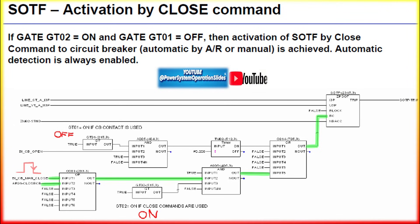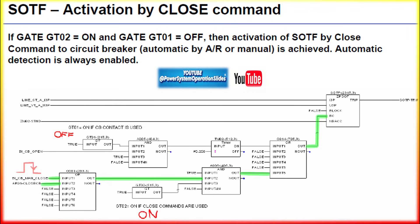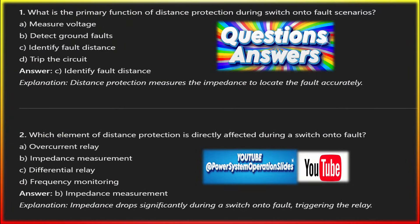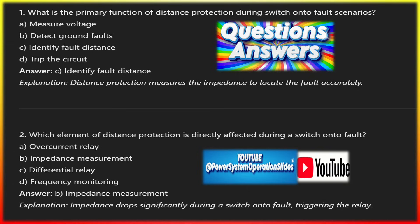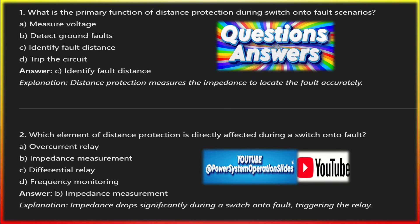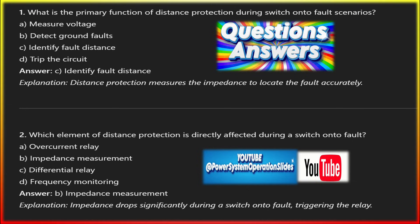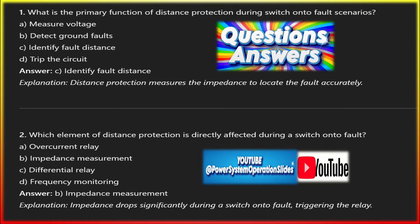Several challenges affect the proper functioning of SOTF. For setting coordination: misconfiguration between SOTF and regular distance protection zones can cause undesired tripping or delayed fault clearing. If the overcurrent threshold is set too high, the relay might fail to detect lower magnitude faults such as high-resistance faults. On the other hand, if the threshold is set too low, nuisance tripping could occur during normal load conditions or due to inrush current.